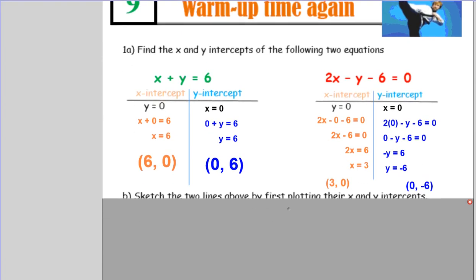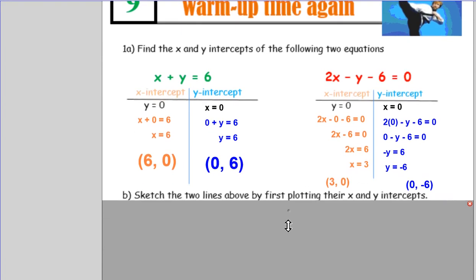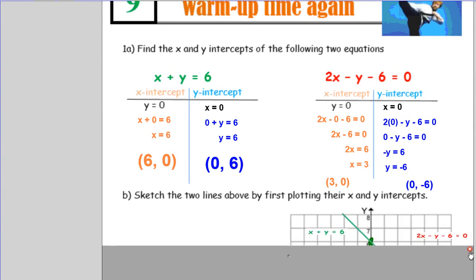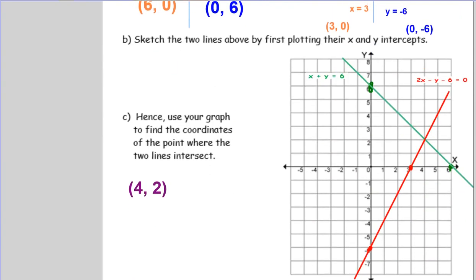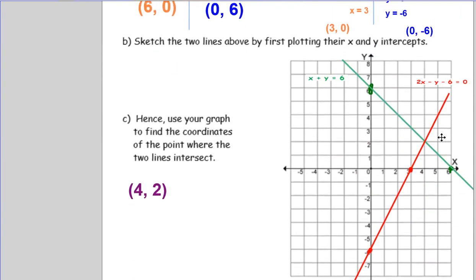Then you're asked to sketch these two lines by first plotting their x and y-intercepts. Notice that I kind of did that. Let's scroll down so you can see the graph. What I did for the first line, which I did in green, first line I did in green, I plotted the x-intercept.